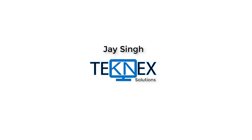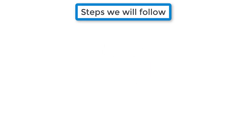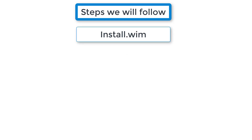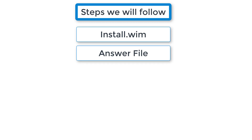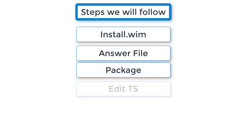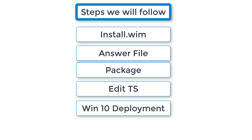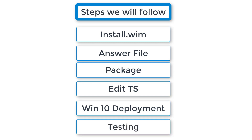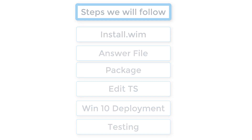Hi everyone, this is Jay Singh, welcome to my channel Technic Solutions. Before we start, let's have a look at what we are going to do in this video. First we will look at the install.wim file, then create an answer file using Windows System Image Manager. With that answer file we will create a package, add it to a task sequence, deploy Windows 10, and look at the results.